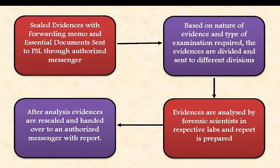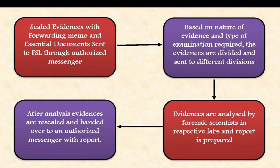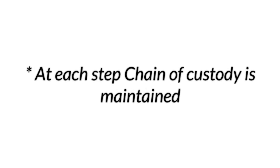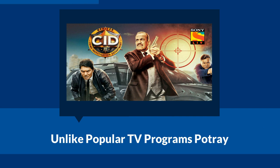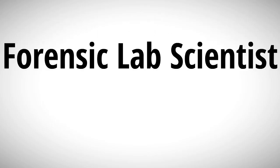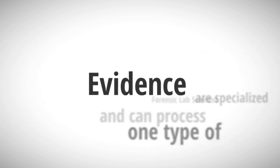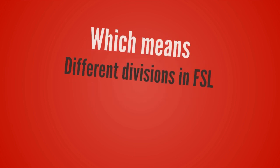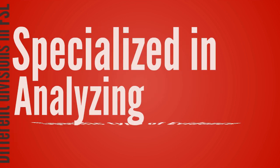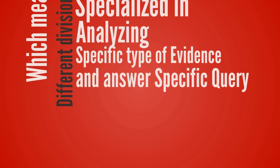After analysis, evidences are re-sealed and handed over to an authorized messenger along with the report. It is very important that at each step, chain of custody is maintained. Unlike what television programs portray, forensic lab scientists and technicians are specialized and can process one type of evidence, which means there are different divisions in a forensic science lab which are specialized in analyzing a specific type of evidence and can answer specific types of queries asked by the investigating agency.